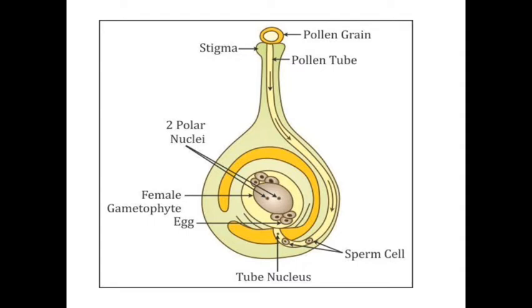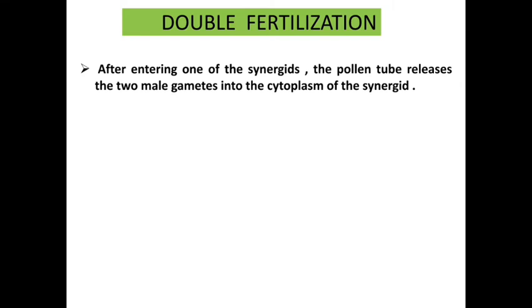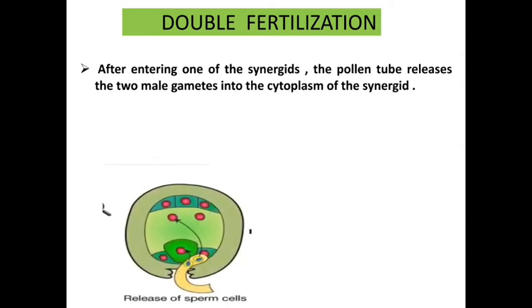Today we will see what happens after pollen-pistil interaction, or after the entry of the two male gametes. This process is known as double fertilization. After entering one of the synergids, the pollen tube releases two male gametes into the cytoplasm of the synergid. The picture shows the release of sperm cells or male gametes into the cytoplasm of the synergid.